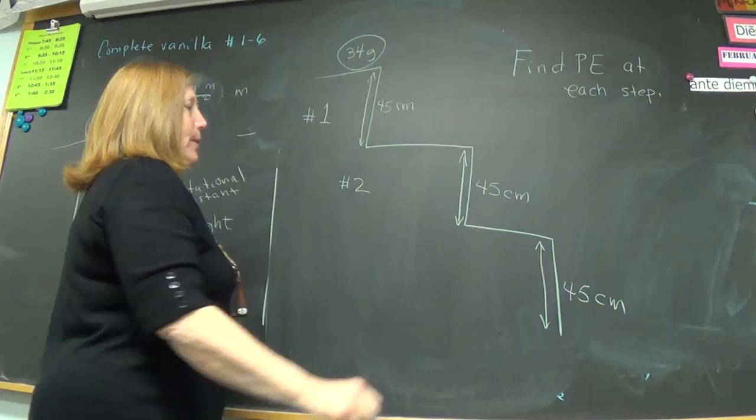Poised on the edge, mine wasn't drawn right. Find MGH there, and if it's poised here at step number two, what would be the MGH there? Oh my goodness, oh my gosh.